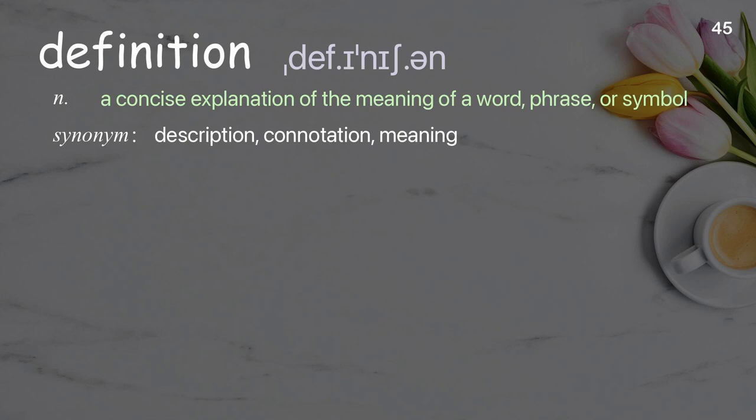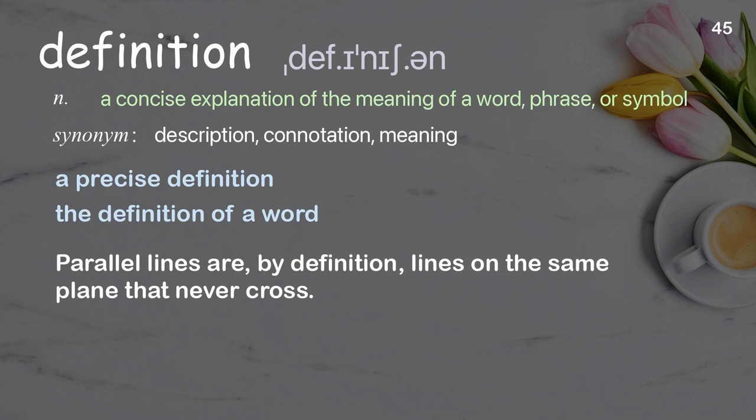Definition: A concise explanation of the meaning of a word, phrase, or symbol. Examples: A precise definition. The definition of a word. Parallel lines are, by definition, lines on the same plane that never cross.